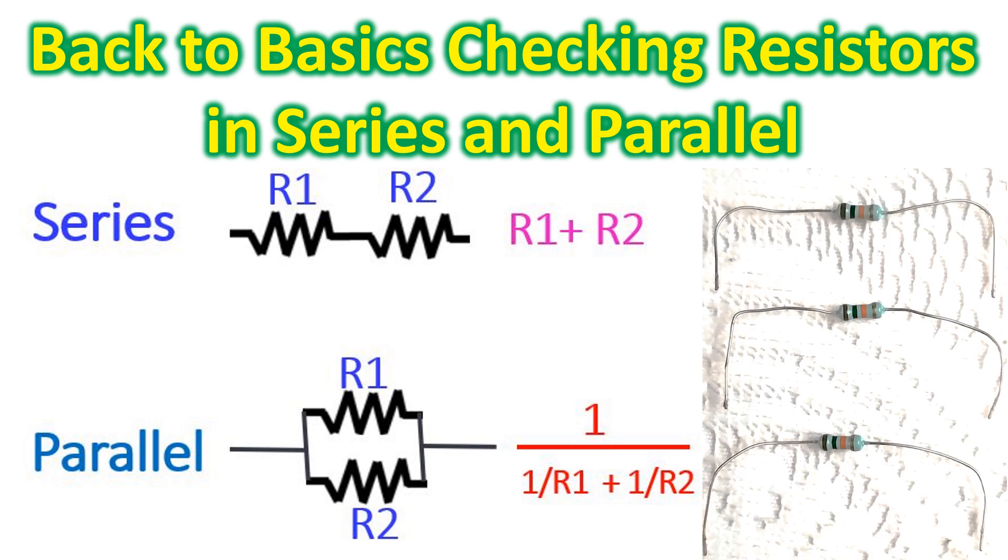But it is not that simple when you connect resistors in parallel. You have to take the inverse value of each resistor, sum them up, and finally get the inverse of the sum to get the final value of resistors connected in parallel.